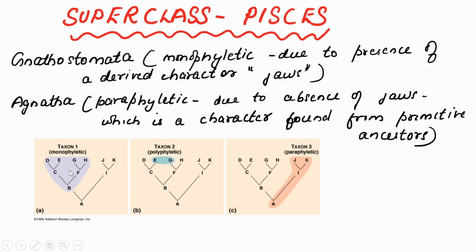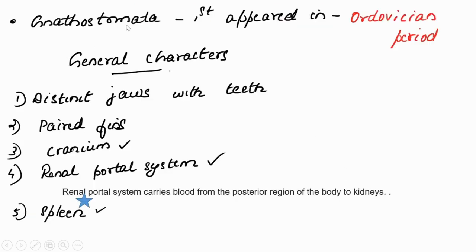In this phylogenetic tree, the highlighted area shows that this group is different from another because of a common character — all descendants from that ancestor share that particular character. In the case of Gnathostomata, that character is jaws. Agnatha is another division of Subphylum Vertebrata; it is paraphyletic, meaning it lacks that common derived character — the jaws — that unites the other group.